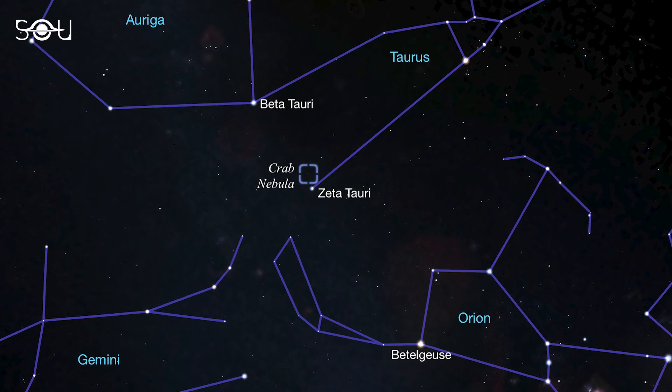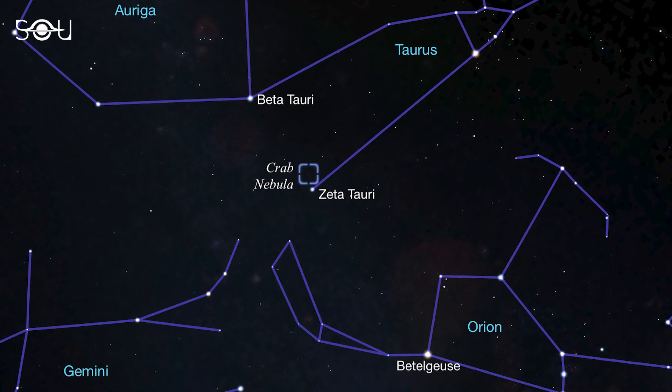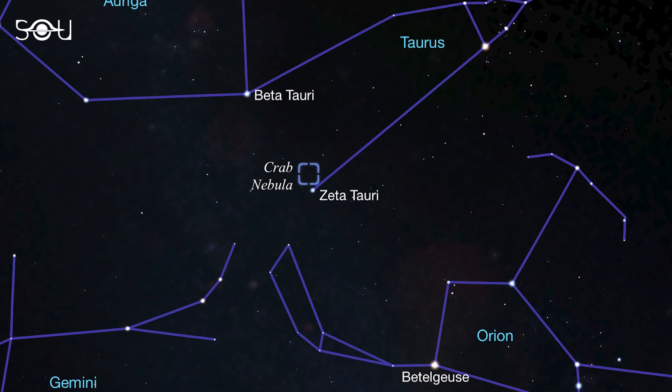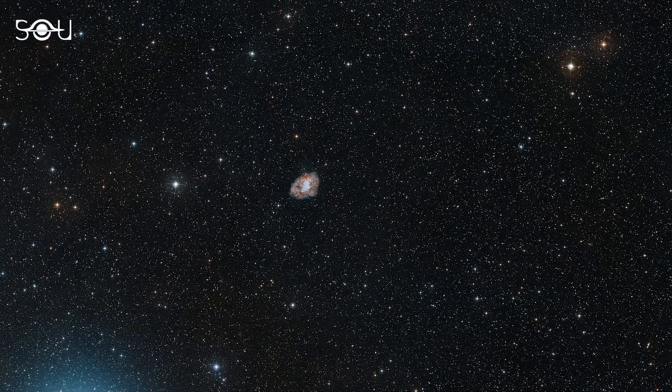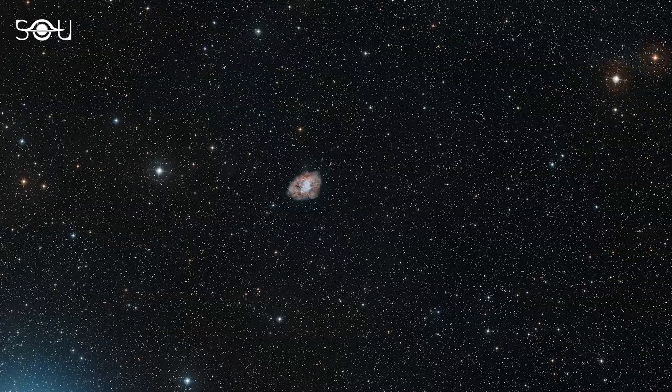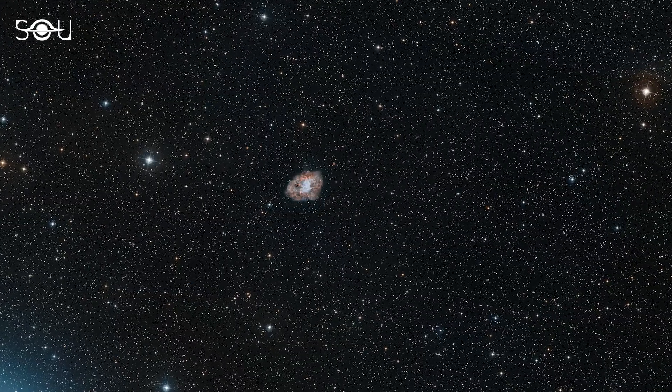The Crab Nebula lies approximately 6,500 light-years from Earth in the constellation of Taurus. Despite its considerable distance, it can be observed with a telescope as a faint, hazy patch in the northern hemisphere's night sky.